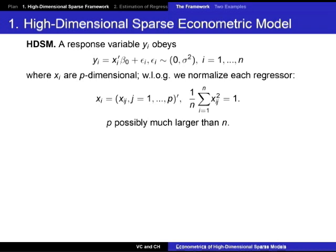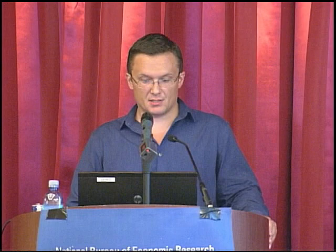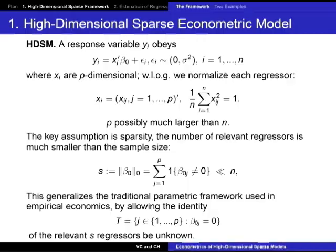The key property here is that P could be large — the number of regressors could be large and potentially much larger than the sample size. The theory will allow for that. With just that, it seems like mission impossible, but we will make assumptions that make estimation possible. The key assumption is going to be sparsity, or later approximate sparsity, which says that the number of relevant regressors is much smaller than the sample size. We consider a lot of regressors, but only s of them are going to be relevant, and this s is going to be much smaller than the sample size.